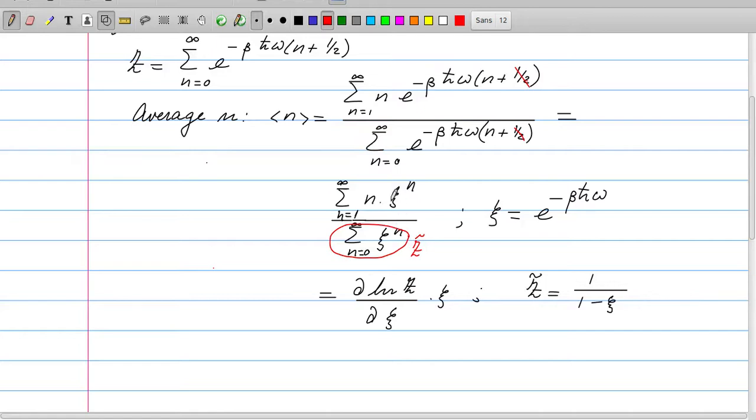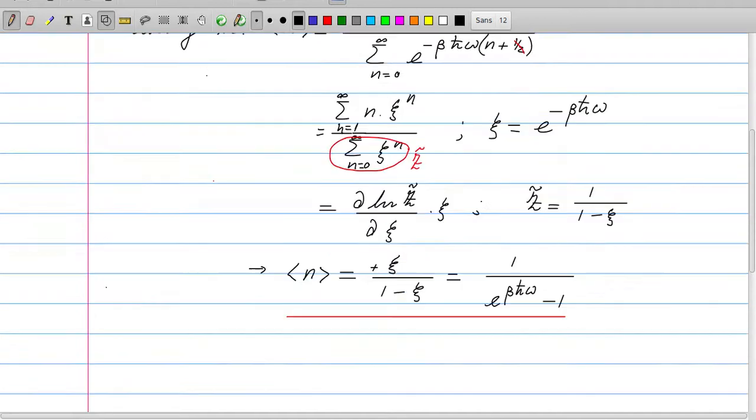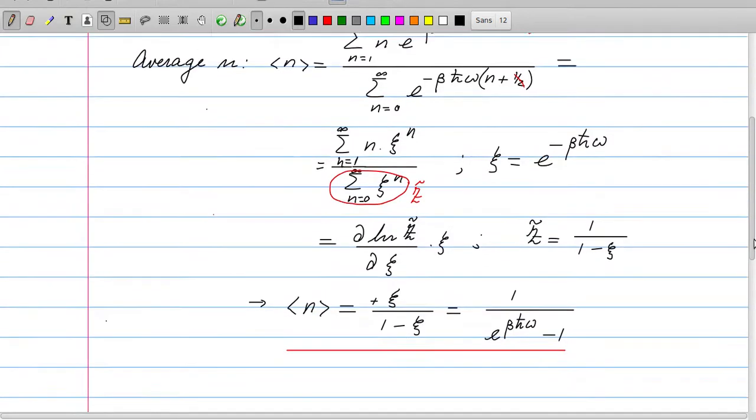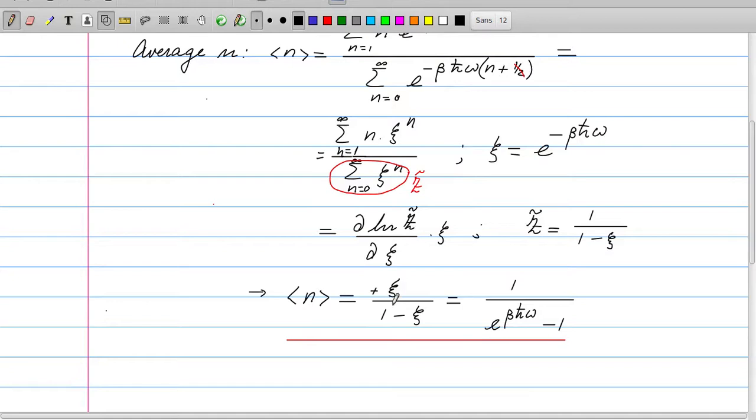Moreover, we can immediately find an expression for the quotient of the two sums here, and that is simply given by the derivative of the logarithm of z-wiggle with respect to xi. So if we take this, we take the logarithm, then taking the derivative with respect to xi first gives us one over z-wiggle, and then the derivative of z-wiggle gives me n times xi to the power n minus one. And in order to compensate for the minus one, we multiply by xi. And then we find immediately that the expectation value of n is given by xi divided by one minus xi.